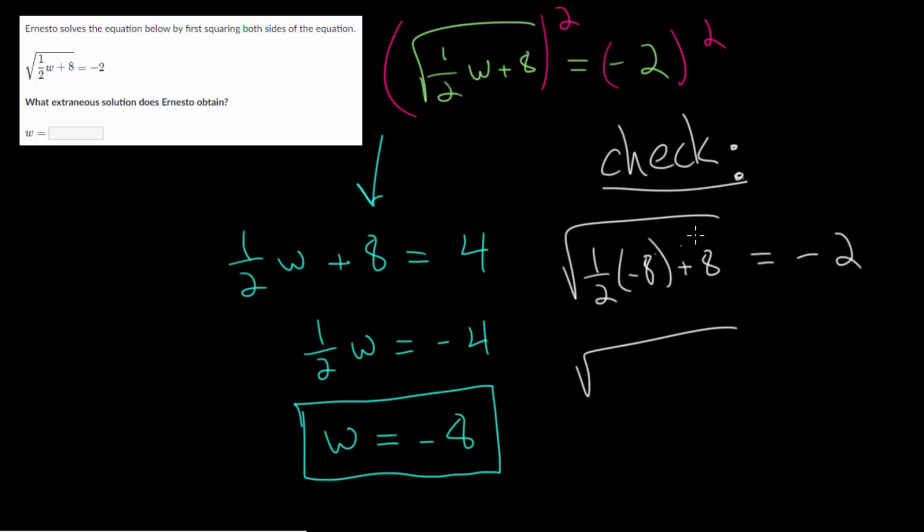So on the left-hand side, minus 8 divided by 2 is negative 4. And then we add 8 to that. So we get the square root of 4 on the left-hand side. And the square root of 4 is 2. And so 2 we know is not equal to negative 2. So this doesn't make sense, which means that this is an extraneous solution.